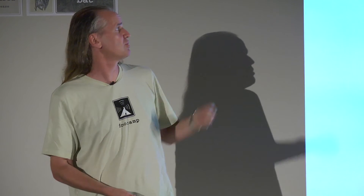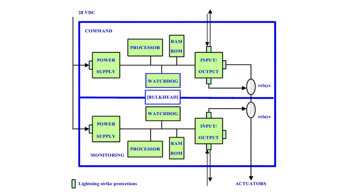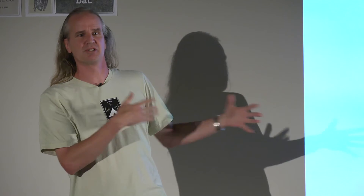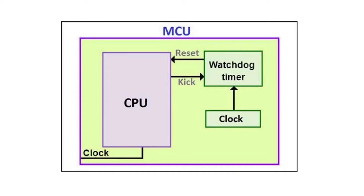An Airbus control system, for example, uses duplicated watchdogs that cross-check each other — if one fails, the system falls back to the second. A standard approach starts with a watchdog timer that resets the CPU every 10 milliseconds unless the CPU resets the watchdog first, plus code that checksums the running code to make sure it hasn't been corrupted.